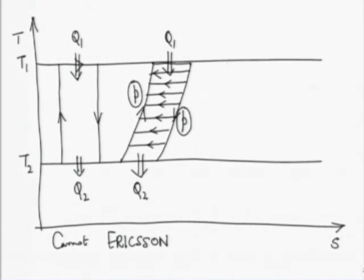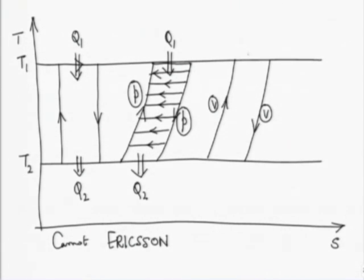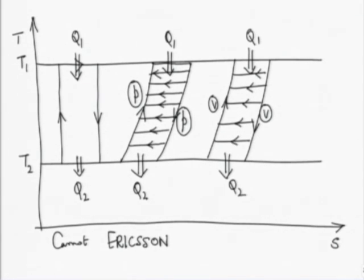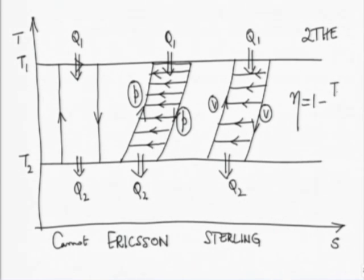Similarly, if instead of two constant-pressure processes you take two constant-volume processes — the Stirling cycle — the constant-volume process lines are slightly steeper on the T-S diagram. Again, you have Q1 and Q2 and an internal heat exchanger (regenerator) so that the Stirling cycle remains a two-temperature heat engine. With an ideal internal heat exchanger, each of these modified cycles is a two-temperature heat engine, so the efficiency of each is 1 minus T2/T1.